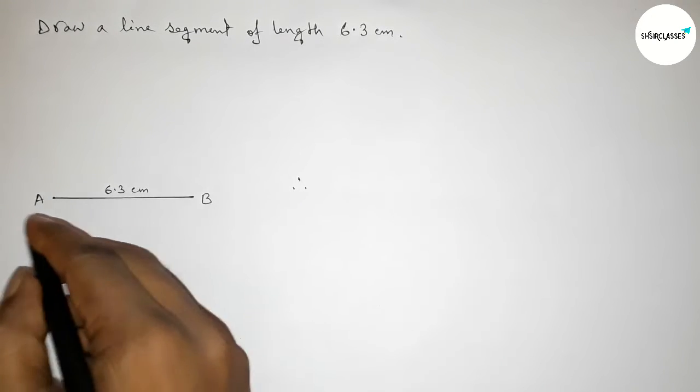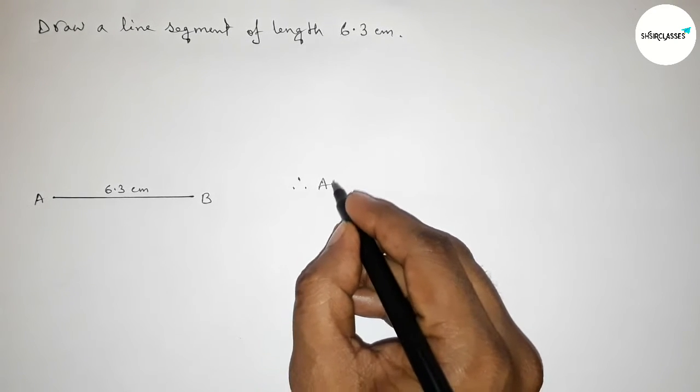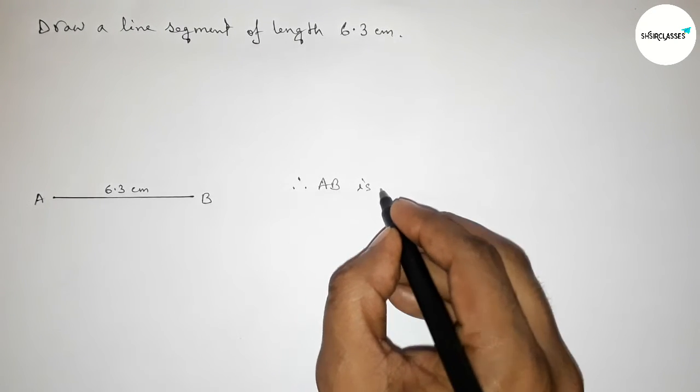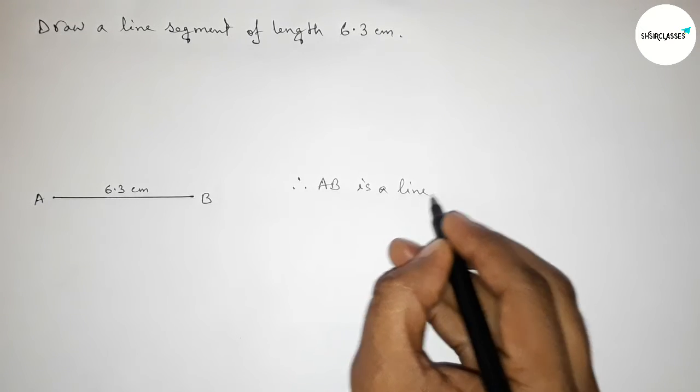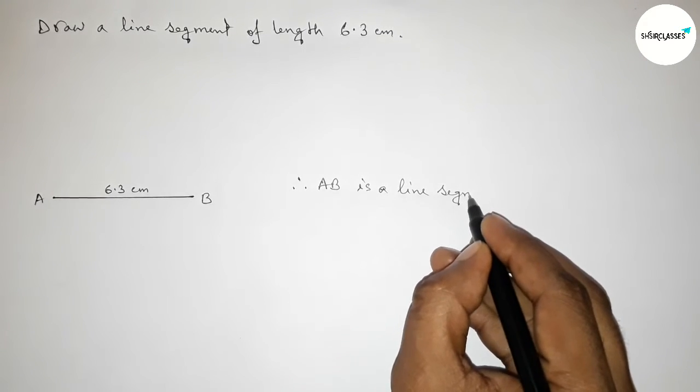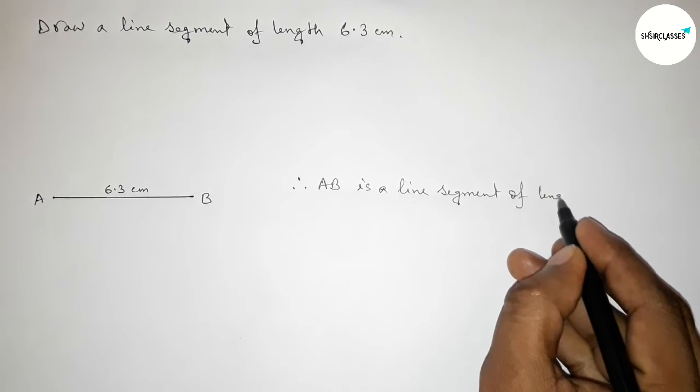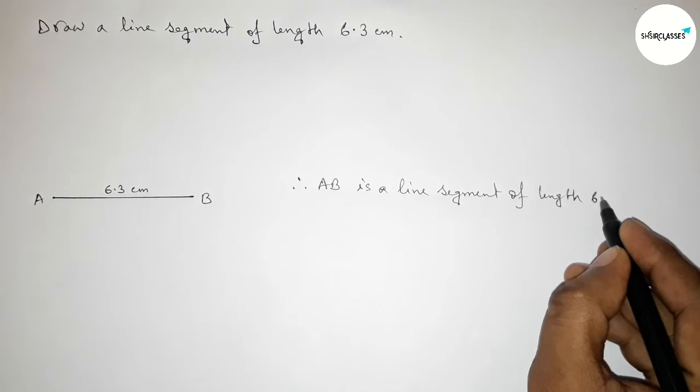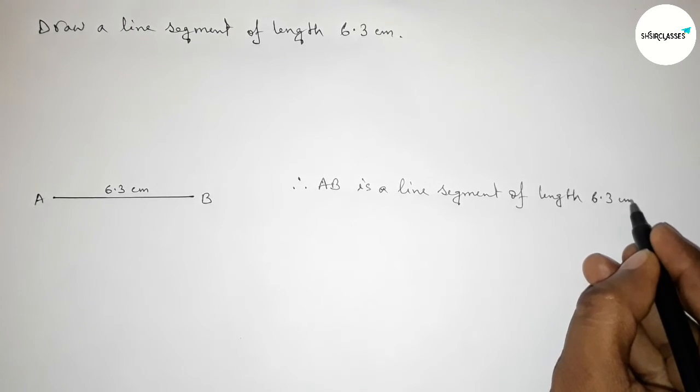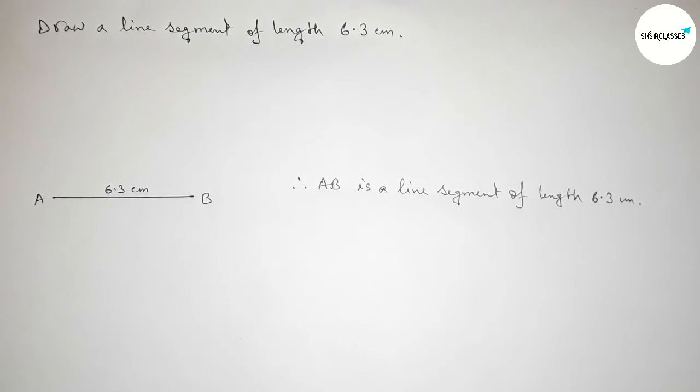Now we can say that AB is a line segment of length 6.3 centimeters, and with the help of a scale you can draw a line segment of length 6.3 centimeters by this way.